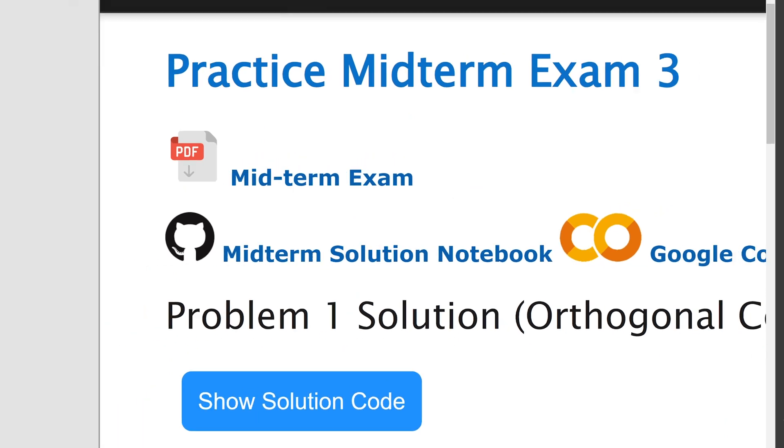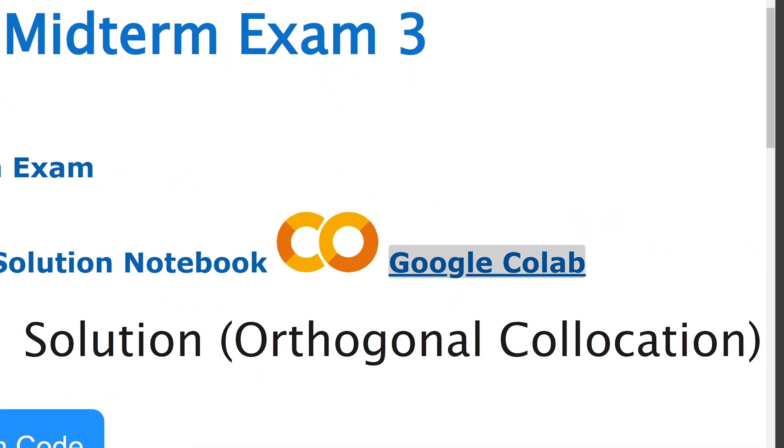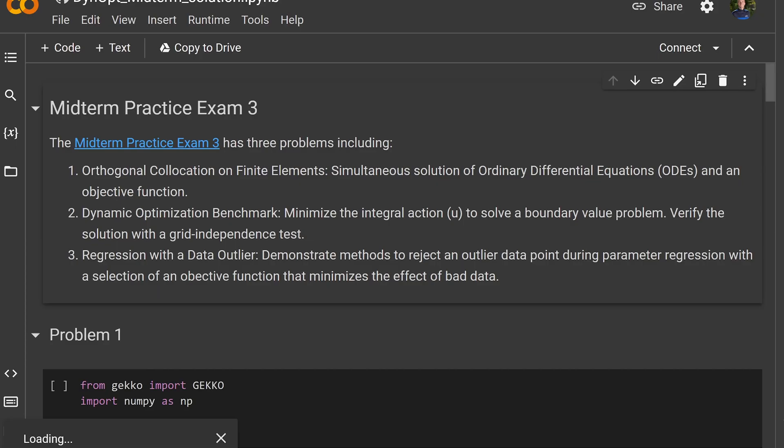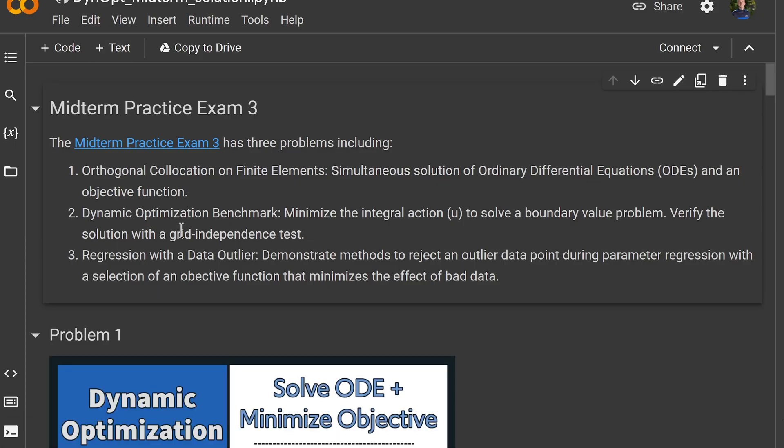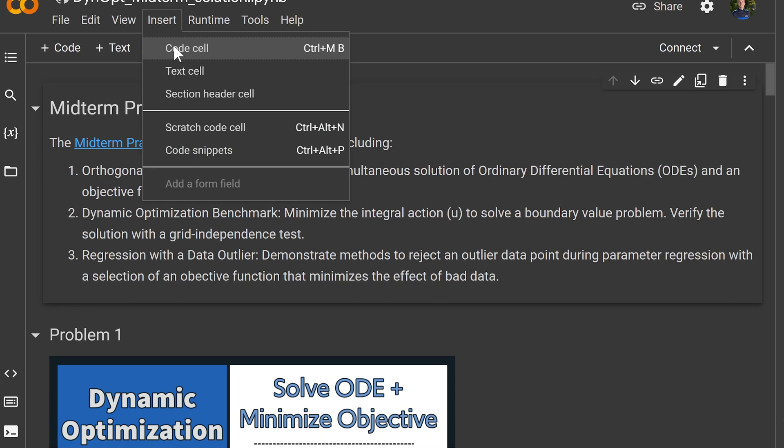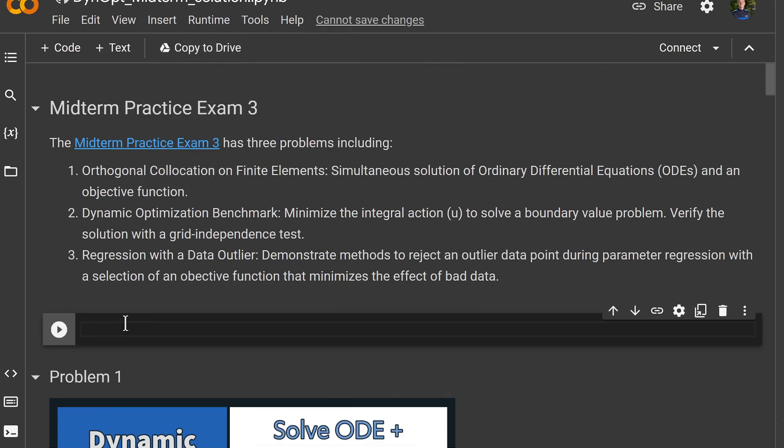All right. And the final option is just to go to Google Colab. So this will run through your web browser. And you can run the Jupyter notebook here. It'll load. If you do this, just go ahead and insert a code cell and pip install GEKKO.